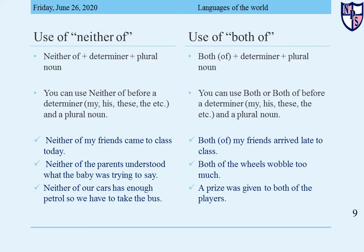Here are some examples. 'Neither of my friends came to class today' — neither of, determiner my, plural noun friends. 'Neither of the parents understood what the baby was trying to say' — determiner the, plural noun parents. 'Neither of our cars has enough petrol, so we have to take the bus' — determiner our, plural noun cars.